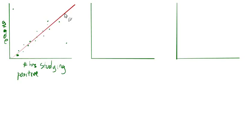And this line, getting back to positive correlation, this line has a positive slope. So as hours go up, grade goes up. Hours go up, grade goes up. So let's look at a different kind of correlation.